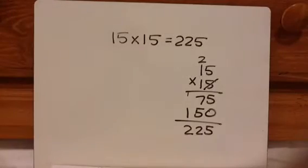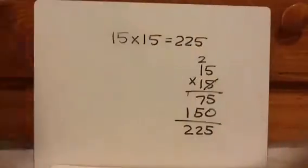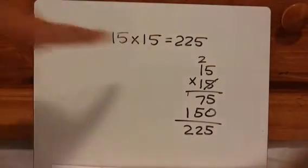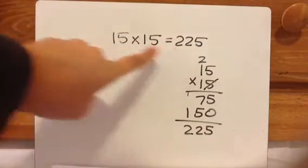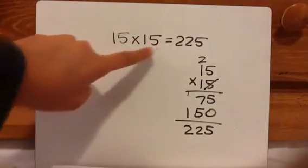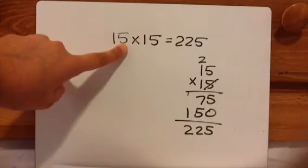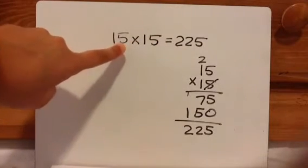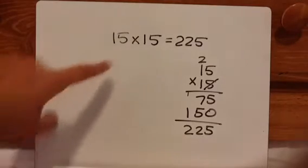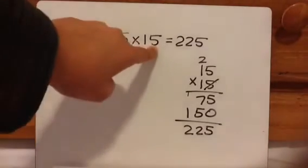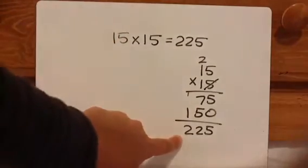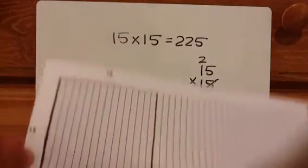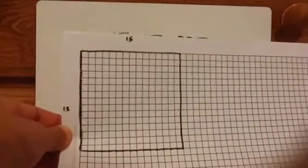Let's look at another square number since the TEKS says all the way through fifteen by fifteen. Two hundred twenty-five is the square number. Fifteen and fifteen multiplied with each other are considered the factors of two hundred twenty-five. So let's look at an array of a fifteen by fifteen. Now if you don't know what fifteen times fifteen equals, you can easily just multiply it and get two hundred twenty-five. Here is the array of fifteen by fifteen.